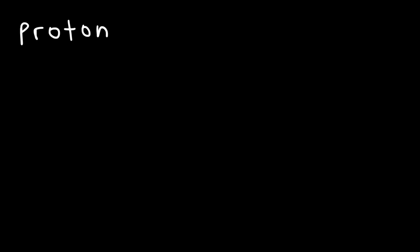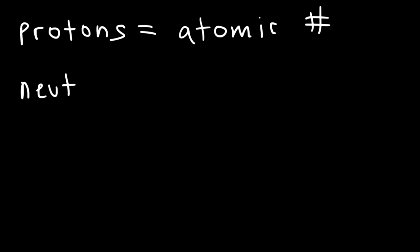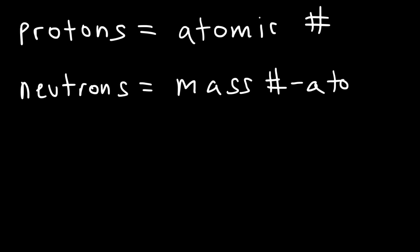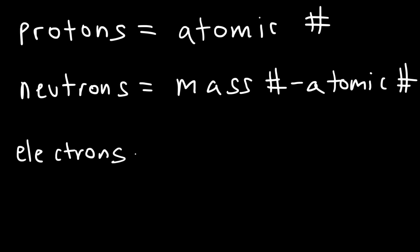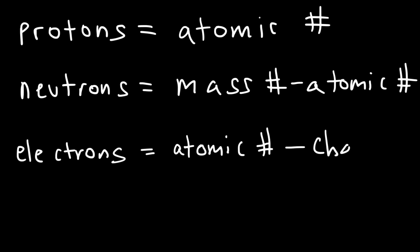The number of protons is always equal to the atomic number. So sodium always has 11 protons. The number of neutrons is the difference between the mass number and the atomic number. And then the number of electrons is equal to the atomic number minus the charge of the species.